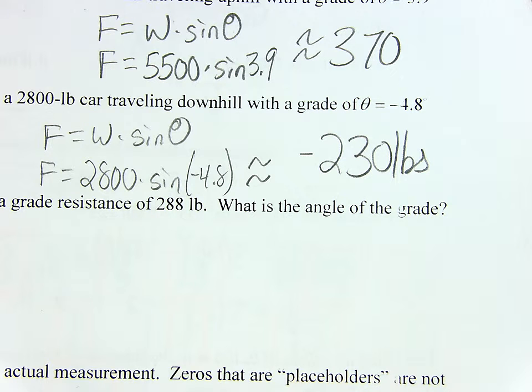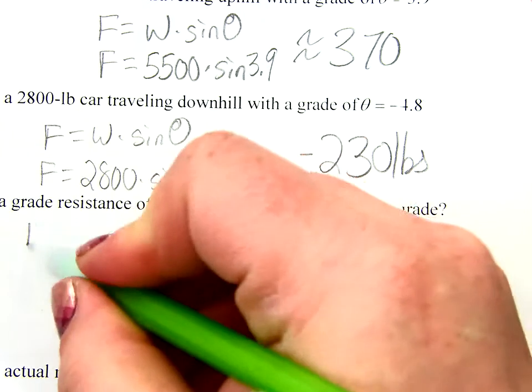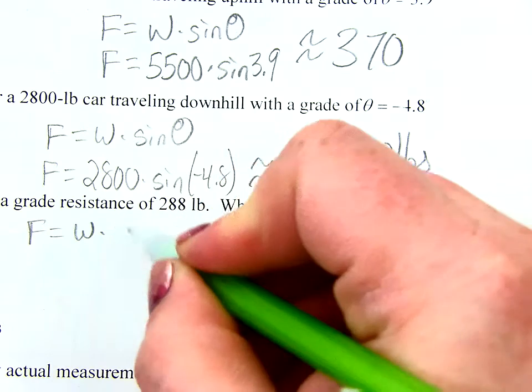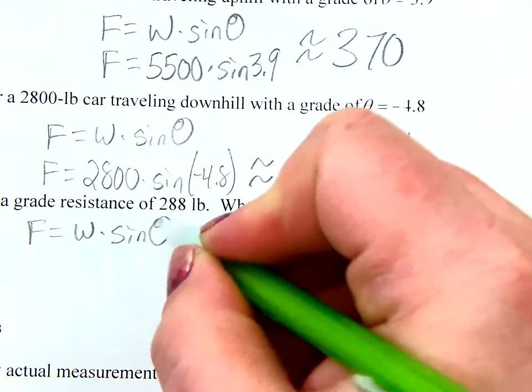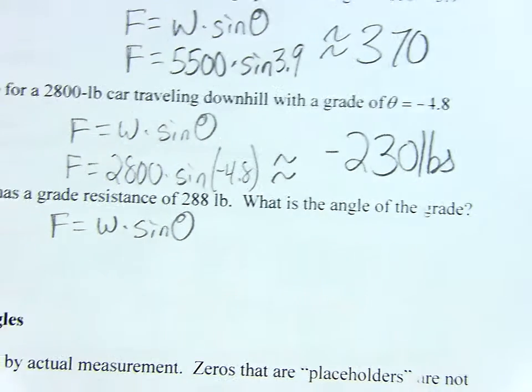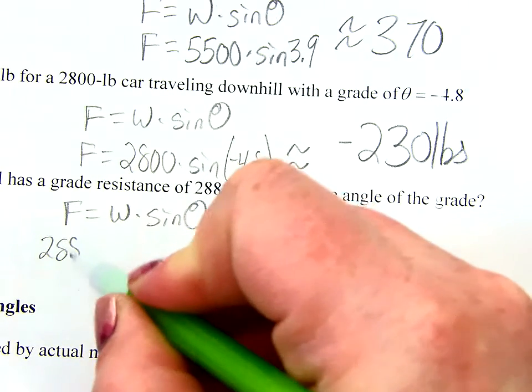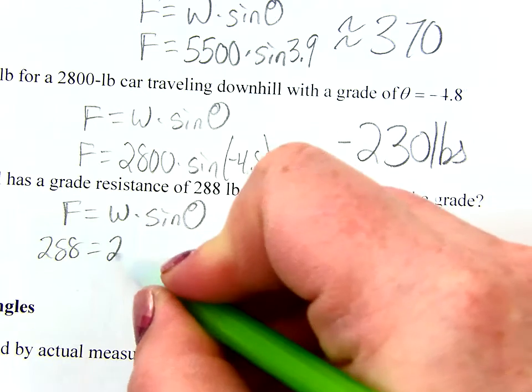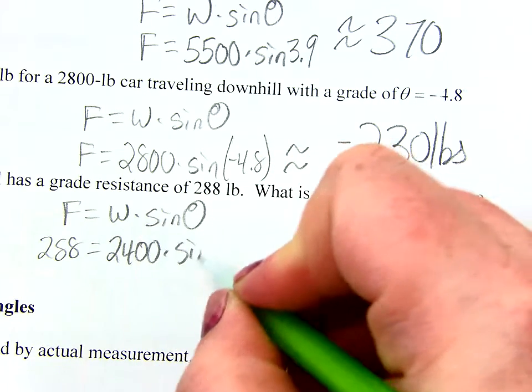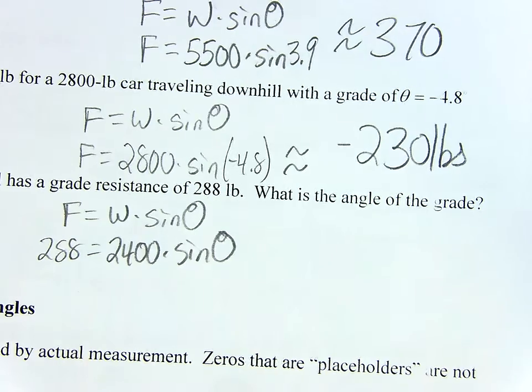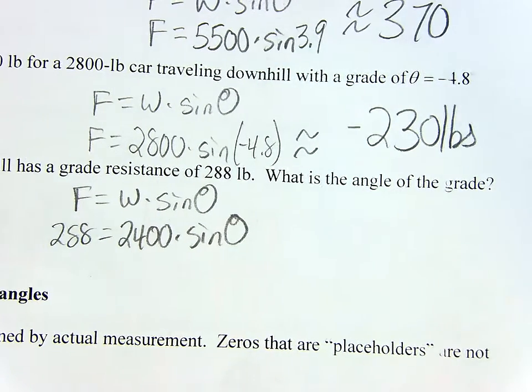Okay, so, I have a 2,400-pound car traveling uphill as a grade resistance of 288 pounds. What is the angle of the grade? So, right. This time, I have the force. I don't have theta. Theta is what I don't know. So, let's fill in our pieces. The force is 288. The weight is 2,400 sine of theta. How do you solve an equation like this for theta?